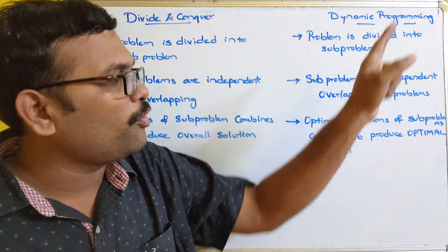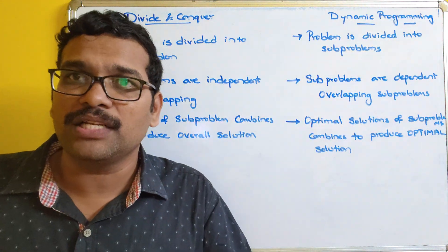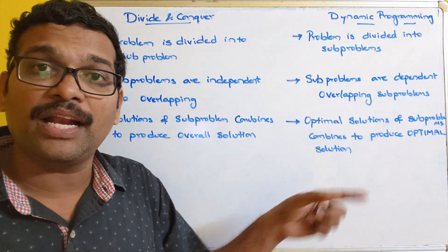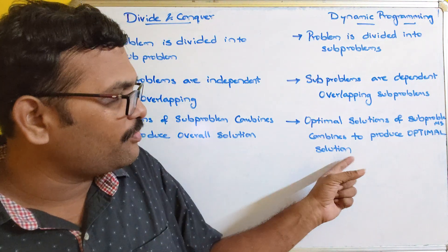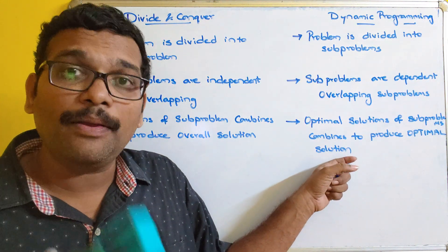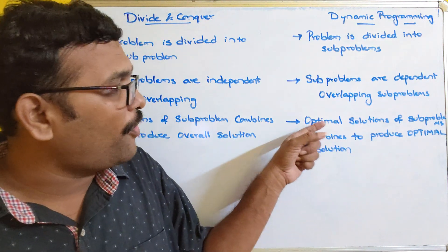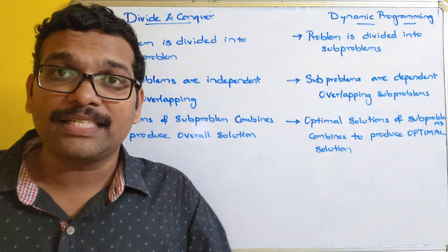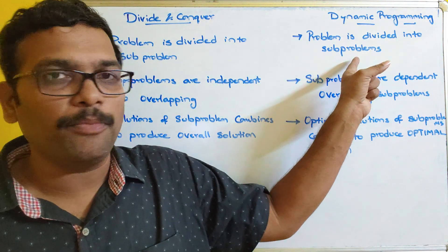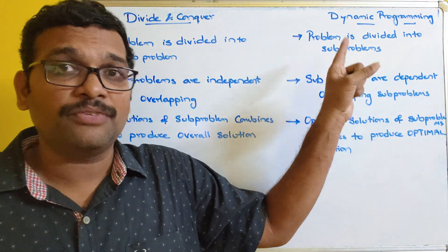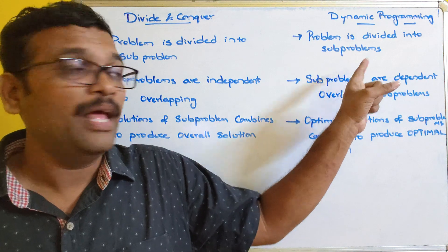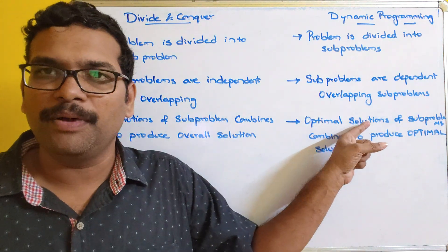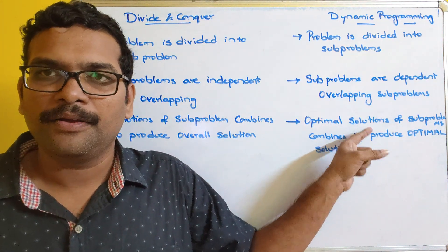But in dynamic programming, we will have feasible solutions and we need to select the optimal solution. This optimal solution is obtained by combining the optimal solutions of subproblems. So the solutions of subproblems must also be optimal.